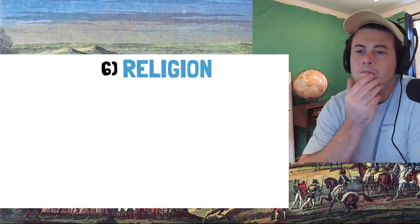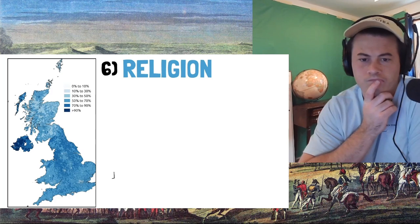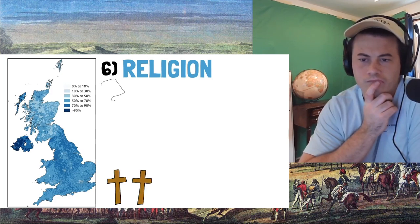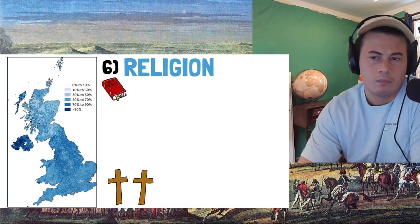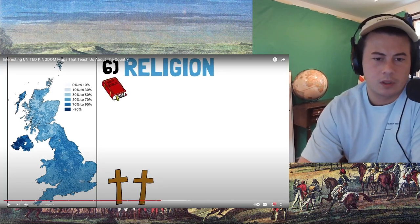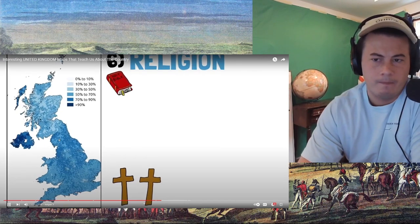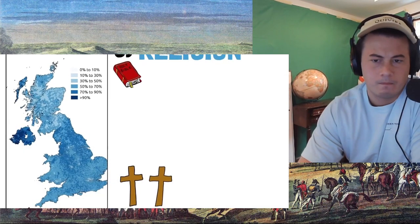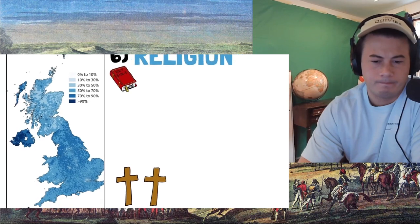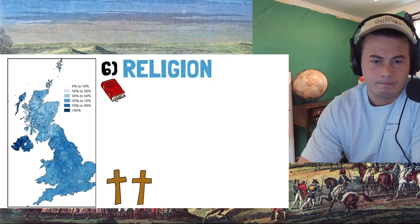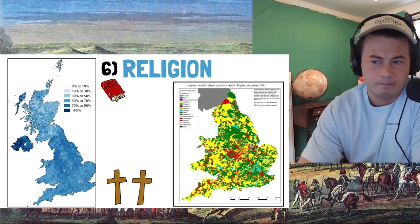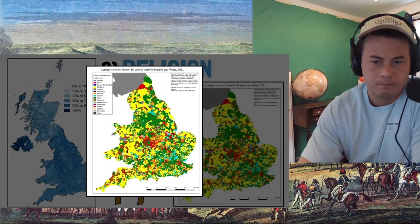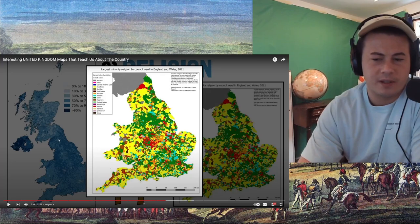For this next one, we can't use a map and need to use a graph instead. This is because Christianity is the dominant religion in every single area of the UK at a large scale, and so a map would provide very little information. Well, what about Protestant versus Catholic — only the percentage of people that are Christian, both Protestant or Catholic? The only conclusion is that Northern Ireland is the most Christian region, and Scotland, the least. We can use this other map, although it's exclusive to England and Wales for some reason — how is there no Protestant-Catholic map? Or did I mishear what he said?